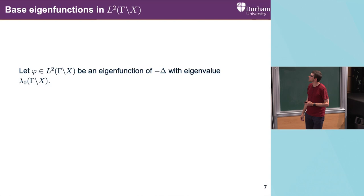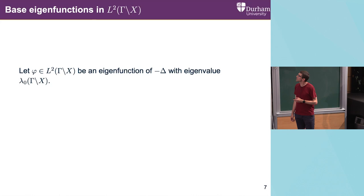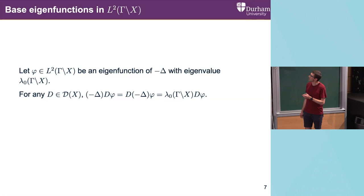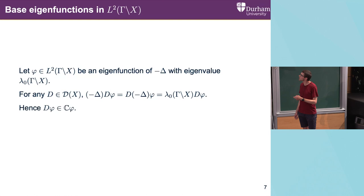We were originally looking at eigenfunctions of the Laplace operator. But from Sullivan's theorem, if you have an eigenfunction of the Laplacian in L2, then it's a simple eigenvalue. So if you take any operator in D(X), we can do the standard trick of commuting the two operators, and we see that D acting on our function is again an eigenfunction of the Laplacian. This means that if there is an eigenfunction at the bottom of the L2 spectrum, then it's in fact a joint eigenfunction.